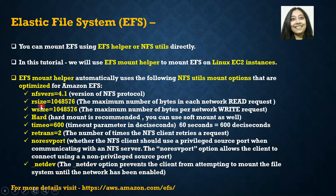The next option is the read size, which is the maximum number of bytes in each network read request. After that is the write size, which is the maximum number of bytes per network write request. The fourth option is whether this is going to be a hard mount or a soft mount. By default, EFS Mount Helper uses hard mount, but if you were mounting using NFS Utils directly, you could potentially use a soft mount as well.